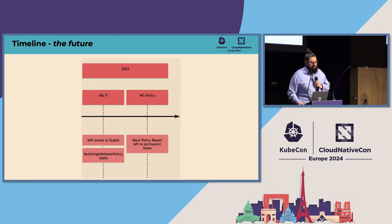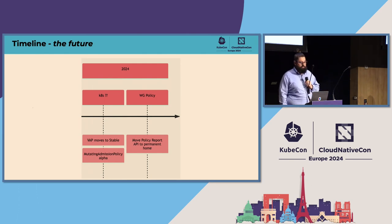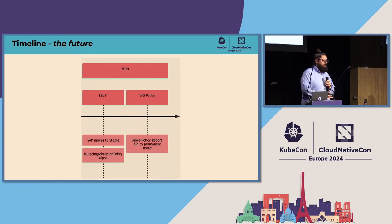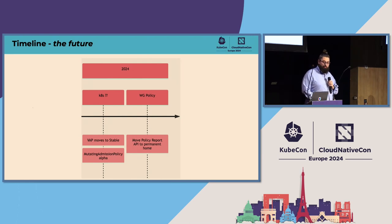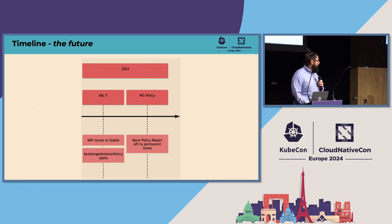What's going to happen this year and moving forward? Ideally Kyverno will graduate, and at some point validating admission policy will move to stable. We'll also see an extension to validating admission policy called mutating admission policy, which will allow us to mutate objects rather than just reject them. And the policy working group is hoping to finish moving the policy report API definition into a more stable permanent home underneath SigAuth.